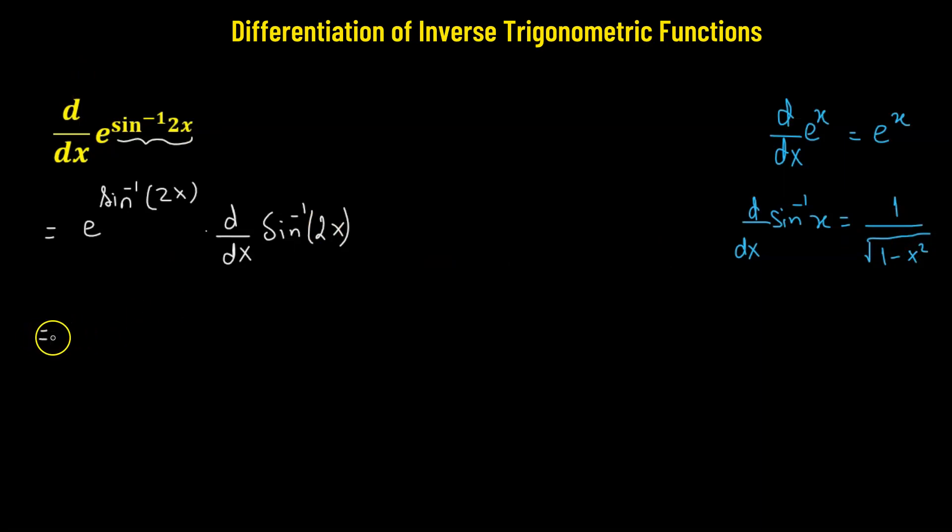So that means we have 1 divided by square root of 1 minus, and here x is 2x, so that means we have 2x squared.